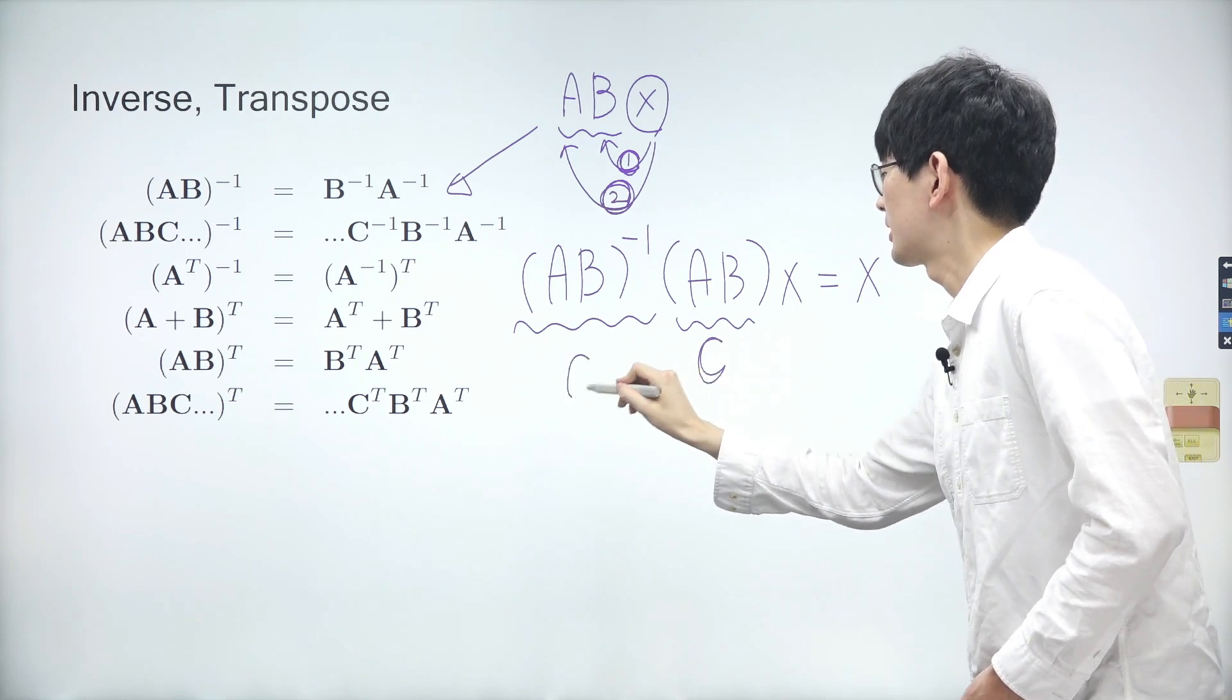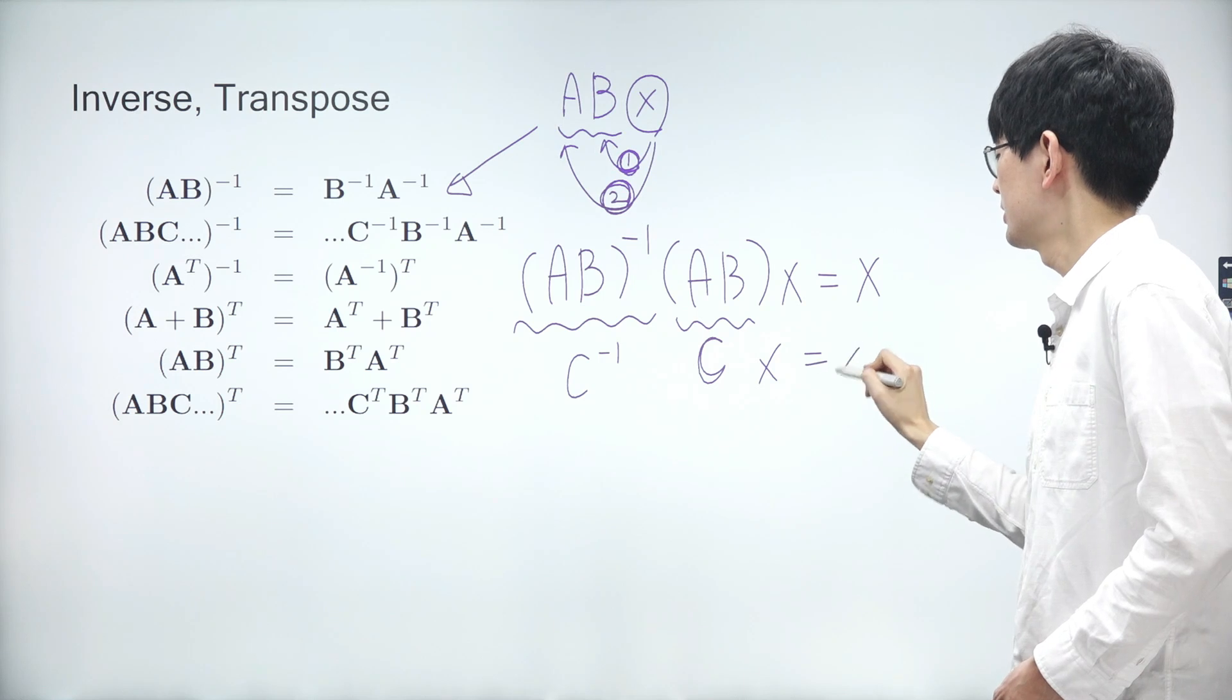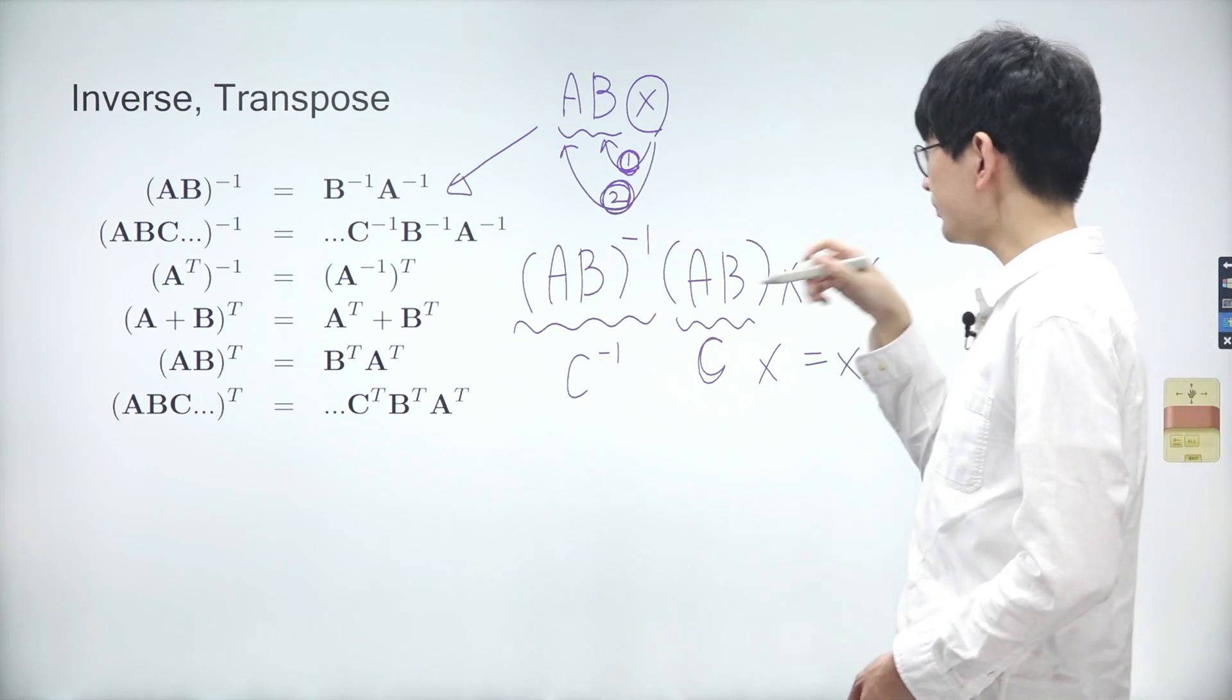Let's denote the product of A and B as C. Then, the inverse of AB is C inverse. The product of C inverse, C, and X is again simply X.